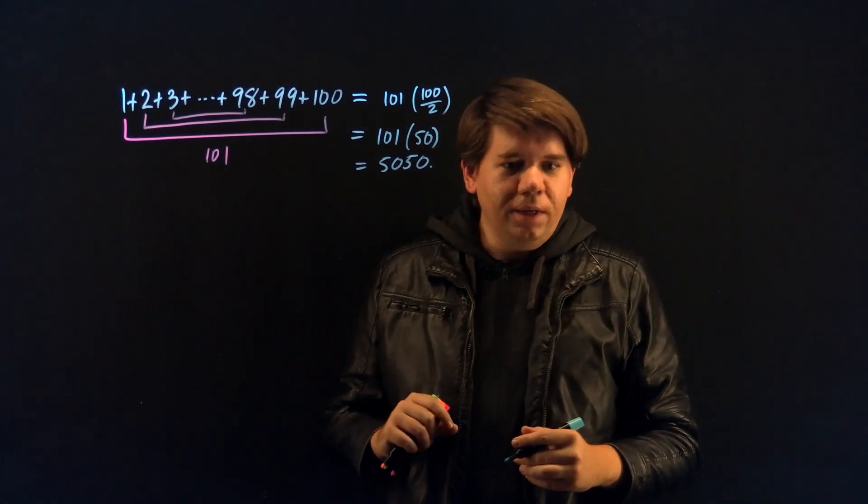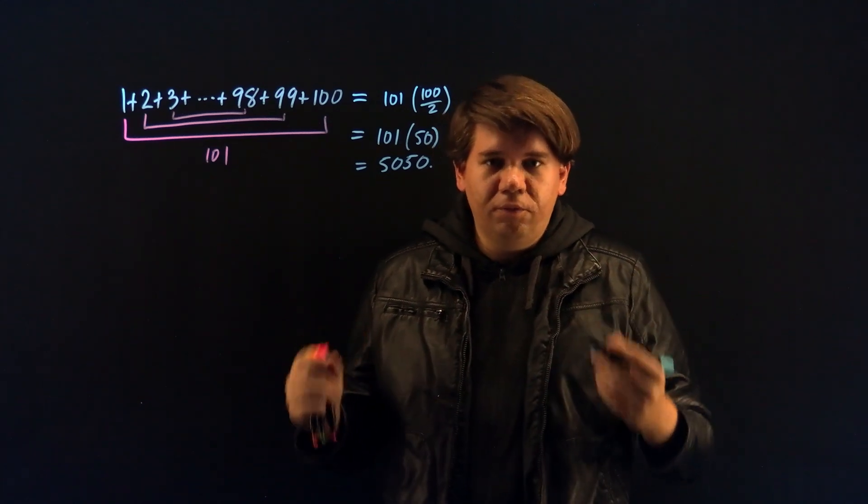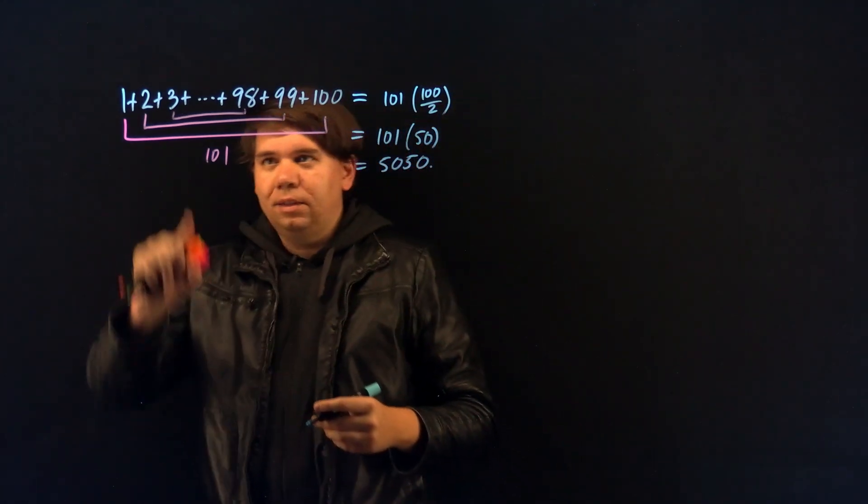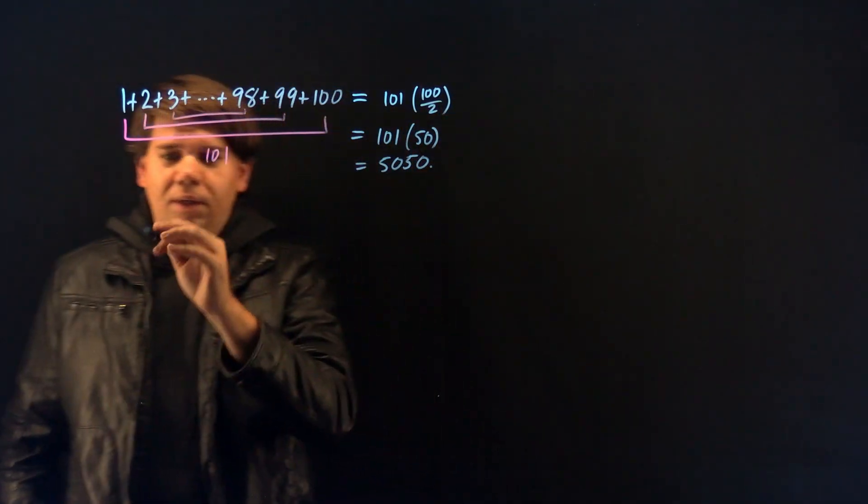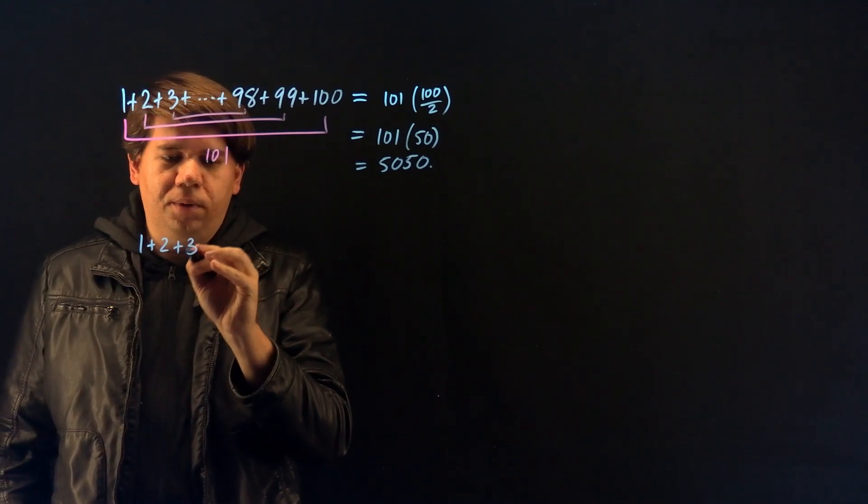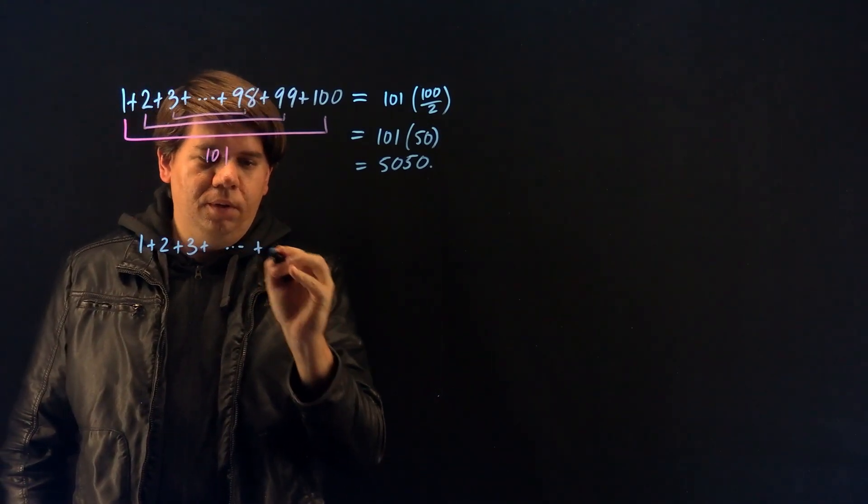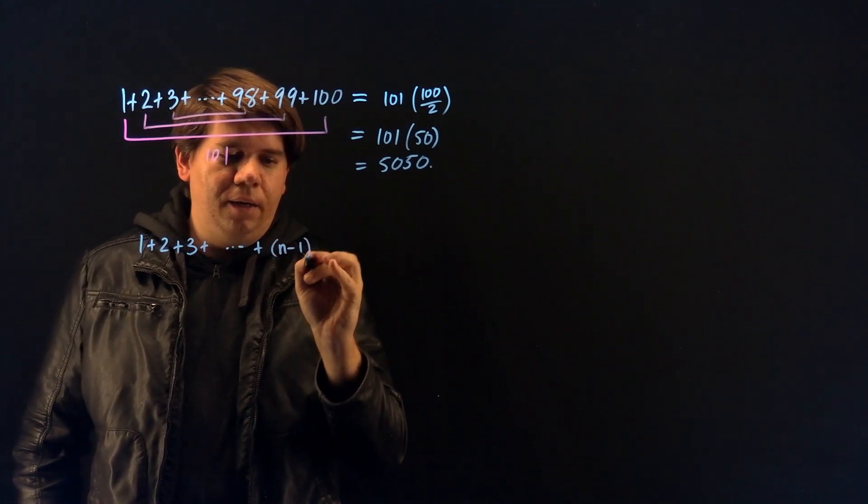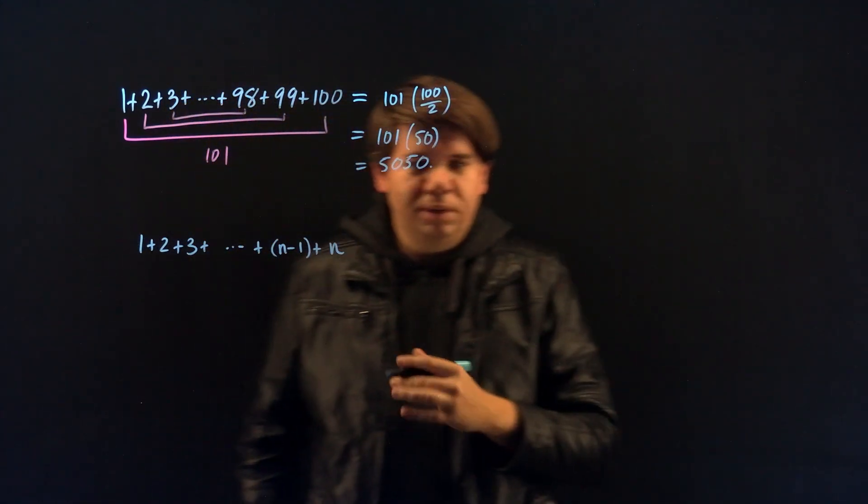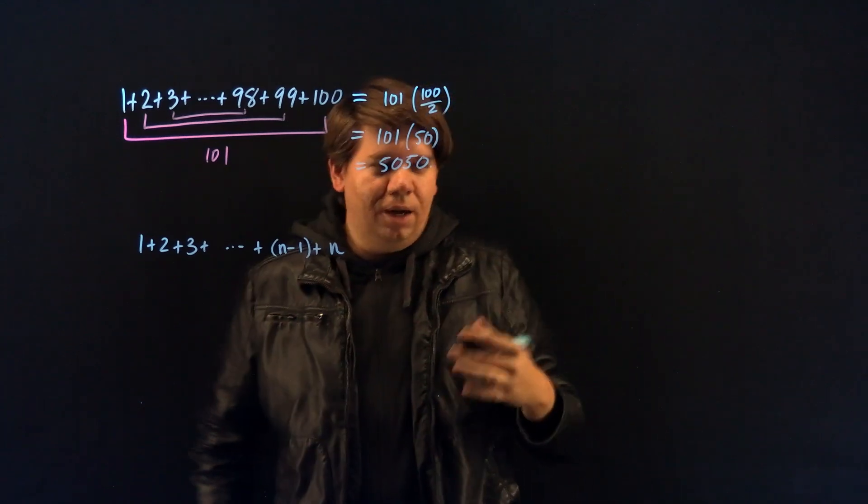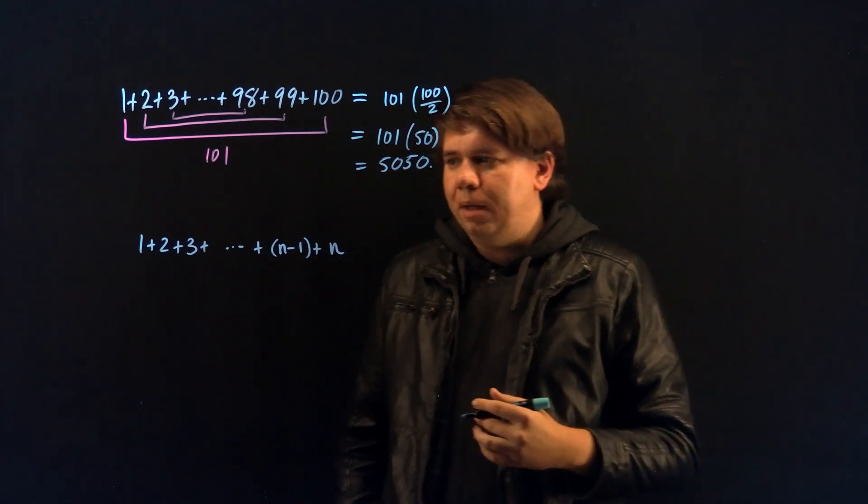From this observation, we can see a more general formula emerge. Instead of just summing from 1 to 100, let's say I want to sum, in general, 1 plus 2 plus 3, up to some number n. Where n can represent whatever number I want. 100, 1,000, whatever it might be.